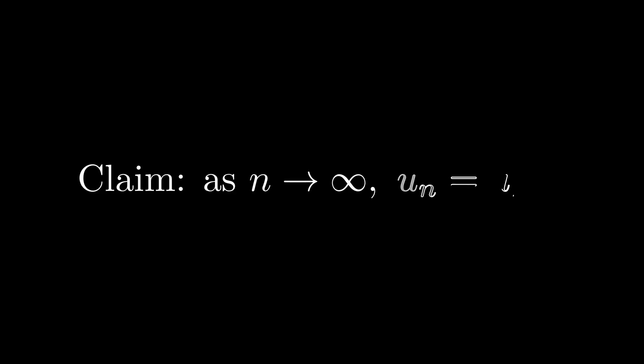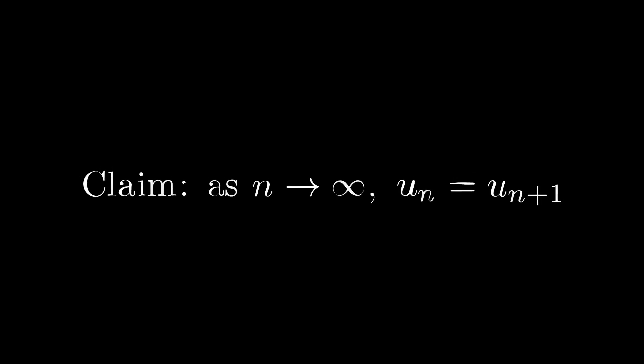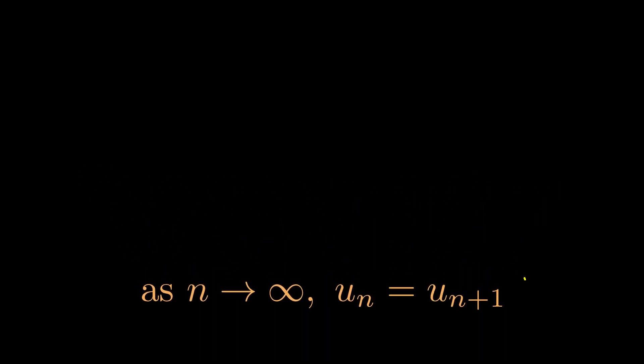The technique we use is based on this claim: As n tends to infinity, un equals u(n+1). It's always annoying when a method states a lot of random symbols and makes a lot of claims without any proof, so let's look into where this comes from and what it really means.